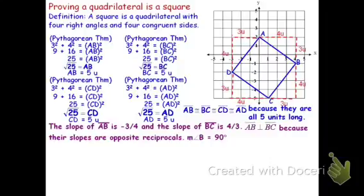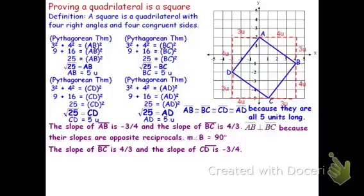Turning to the next angle: segments BC and CD form angle C. The slope of segment BC is four-thirds, while the slope of CD is negative three-fourths. Those segments are perpendicular because their slopes are opposite reciprocals, so BC is perpendicular to CD. Therefore the angle they form has a measure of 90 degrees, and the measure of angle C is 90 degrees.